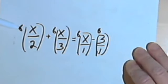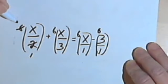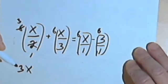For example, this 6 times x over 2, since I can divide the 6 by a 2 and the 2 by a 2, it's just going to become a 3x, and so on.